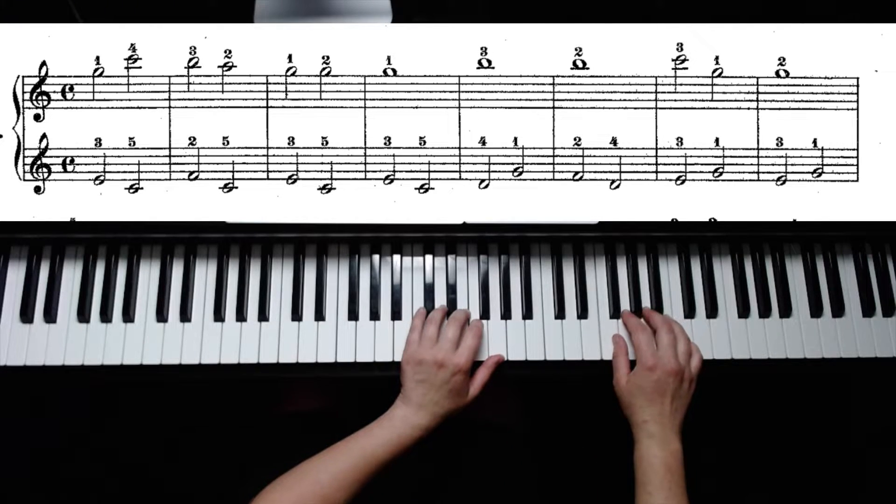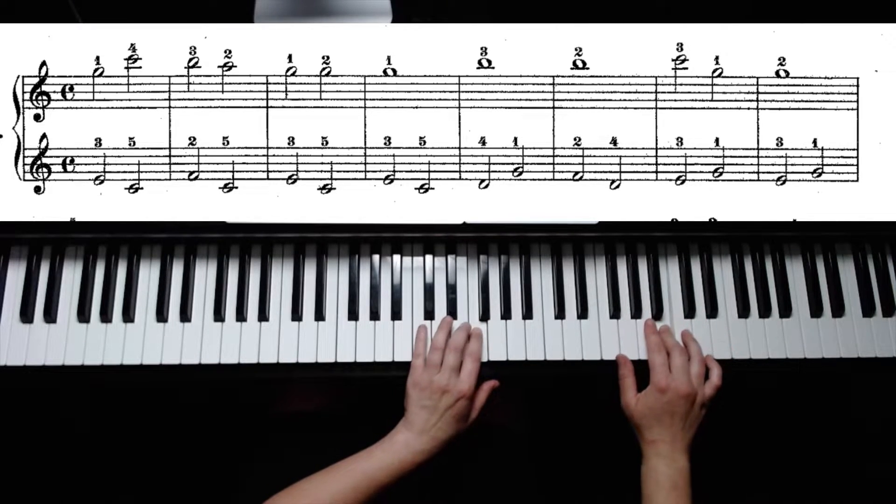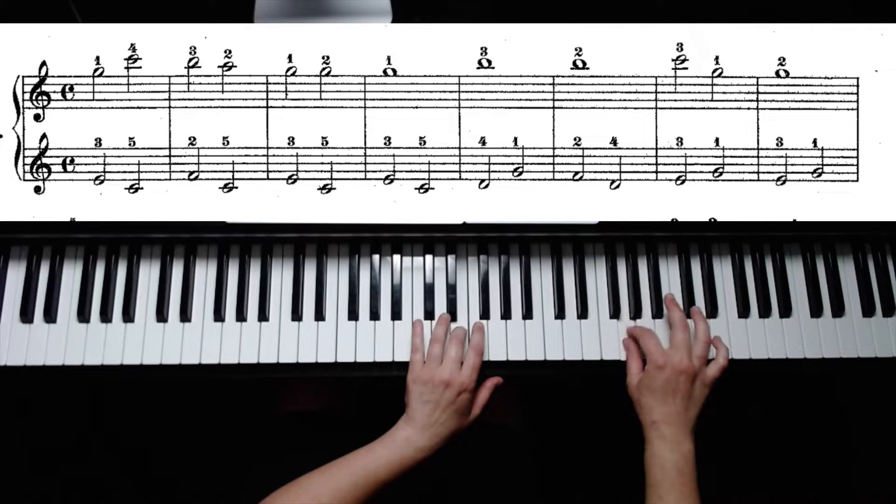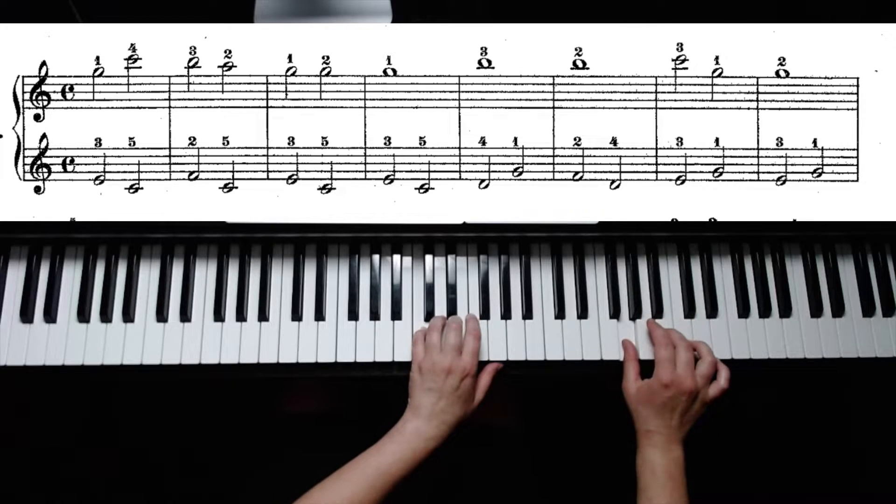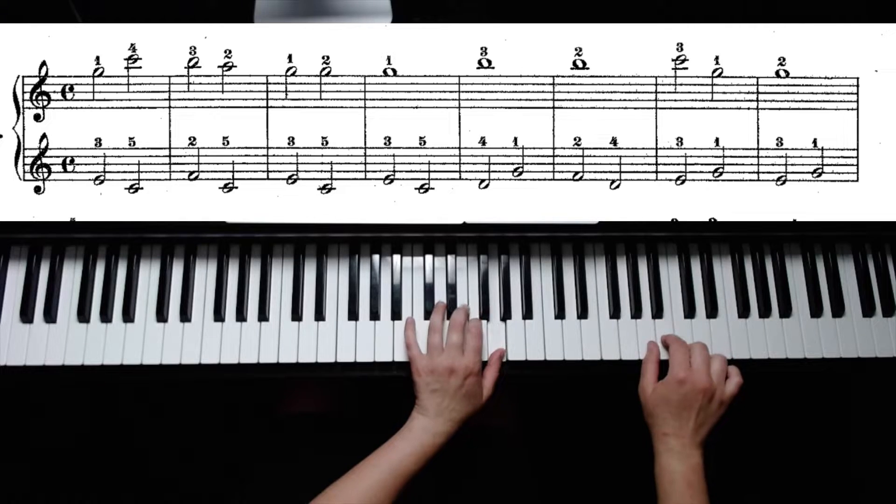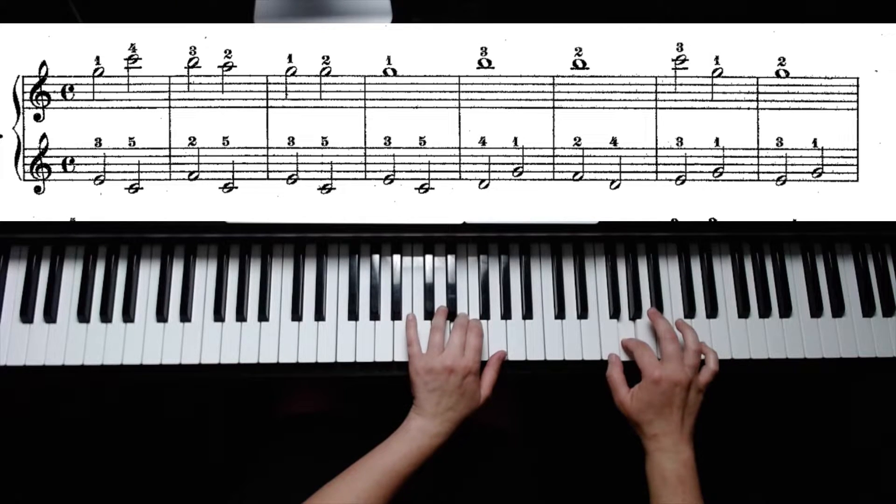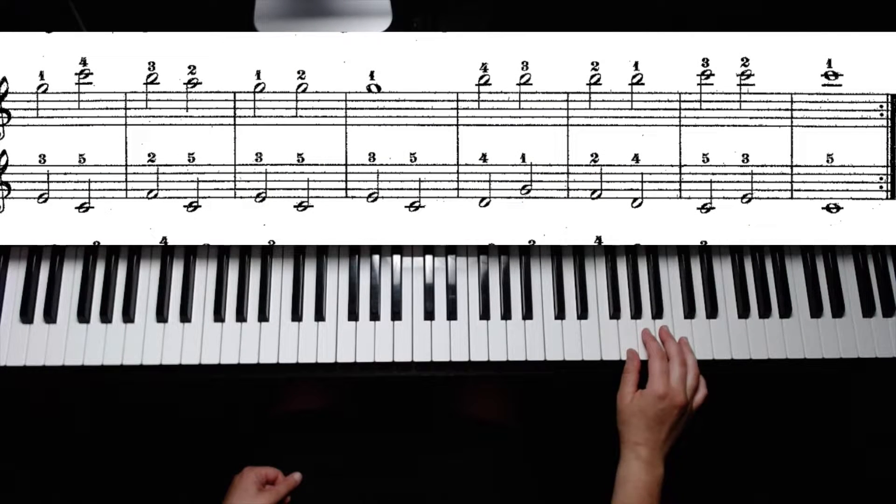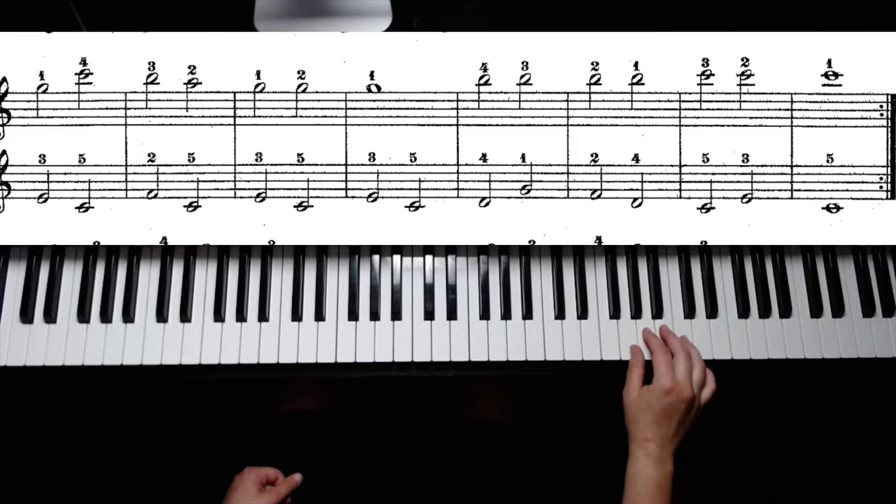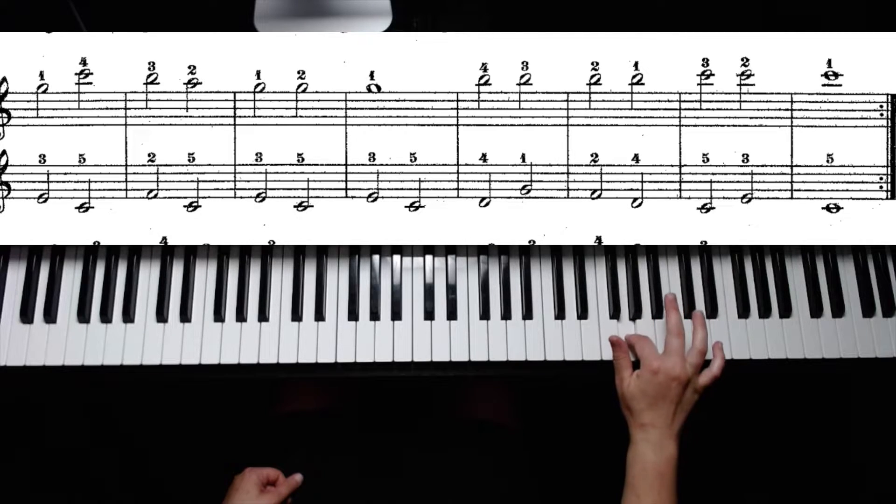Now let's play this first line hands together. And now we're into the second line. This line starts the same way. Start at G, going up to C, B, A, G, change G to two, and back to one.